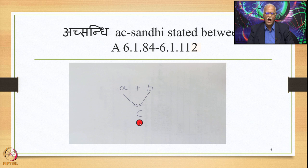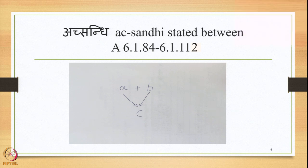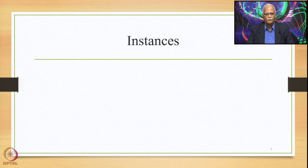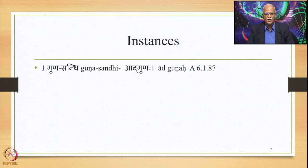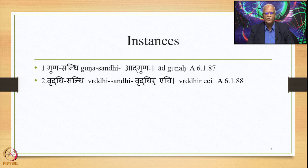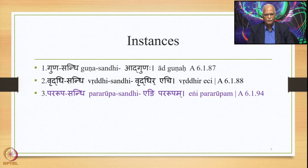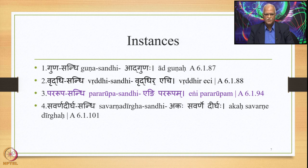This is Dvishthanika Ekadesha, stated from 6.1.84 up to 6.1.12. There are five instances: Guna Sandhi stated by Adgunaha 6.1.87; Vriddhi Sandhi stated by Vriddhi Rechi 6.1.88 onwards; Pararupa Sandhi stated by Engi Pararupam 6.1.94; and Savarana Deerghasandhi stated by Akas Savarane Deerghaha 6.1.101.